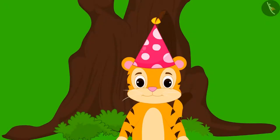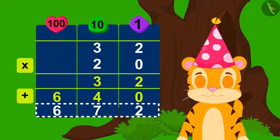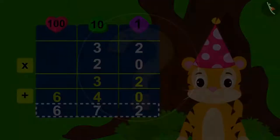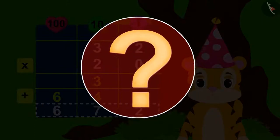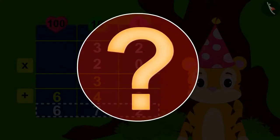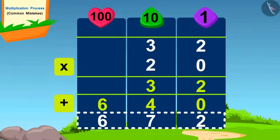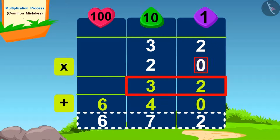Shere Khan is wrong. He made a mistake while multiplying. Can you tell me what was the mistake Shere Khan made? Shere Khan made a mistake while multiplying by zero.